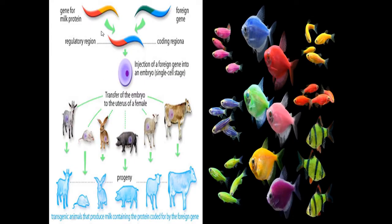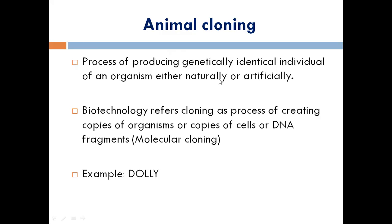This slide shows how transgenic animals are formed. The gene responsible for the production of antitrypsin was isolated and constructed into a vector. That vector was then injected into cattle (livestock), and the progeny formed from this process has the ability to produce that particular gene product. Another example shown here is fluorescent fish, which nowadays act as ornamental fish.